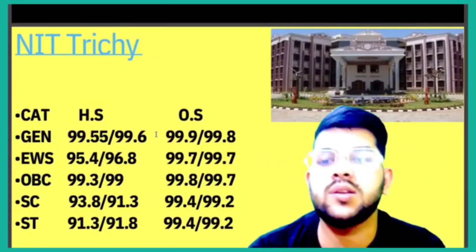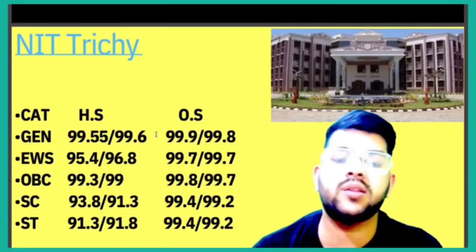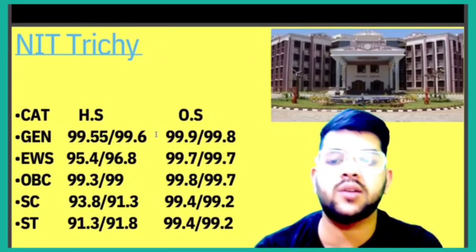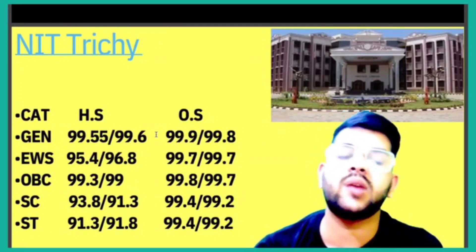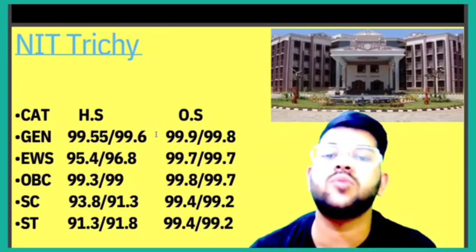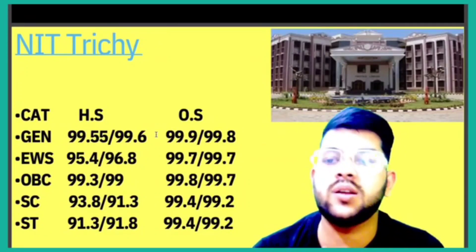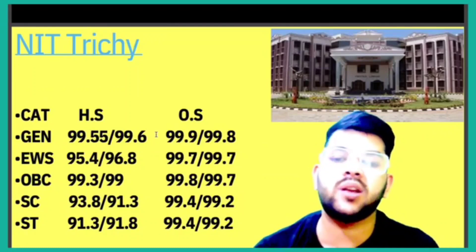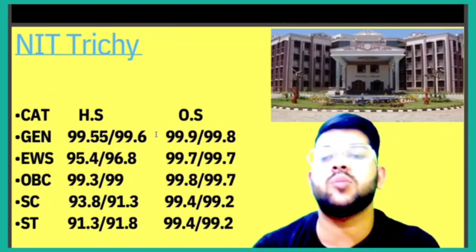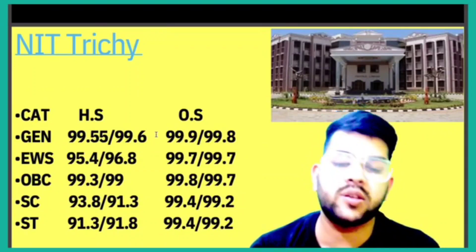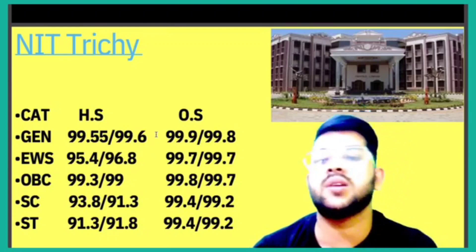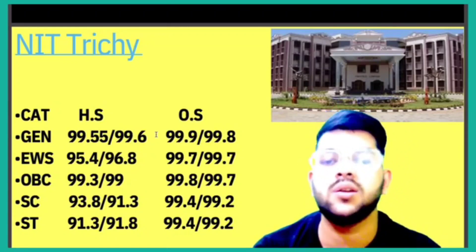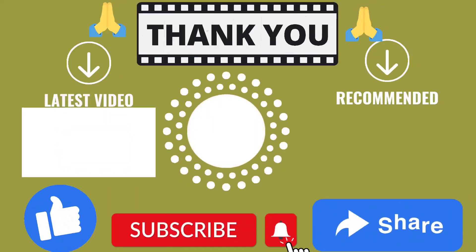Now for the number one NIT — NIT Trichy: General 99.9, EWS 99.7, OBC 99.8, SC 99.4, ST 99.4 — for General, EWS, OBC, SC, ST respectively, for other state male. If you are female, check after the slash; for home state, check the side-wise information.